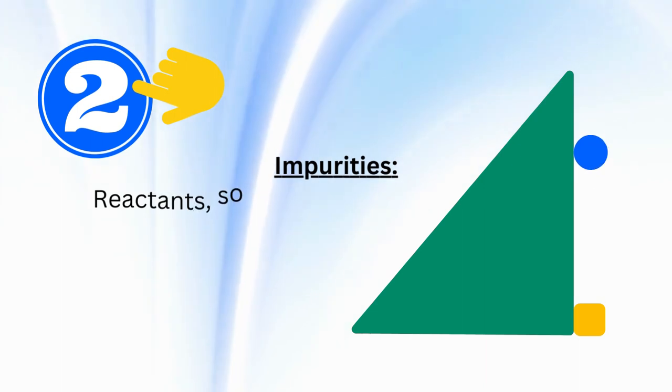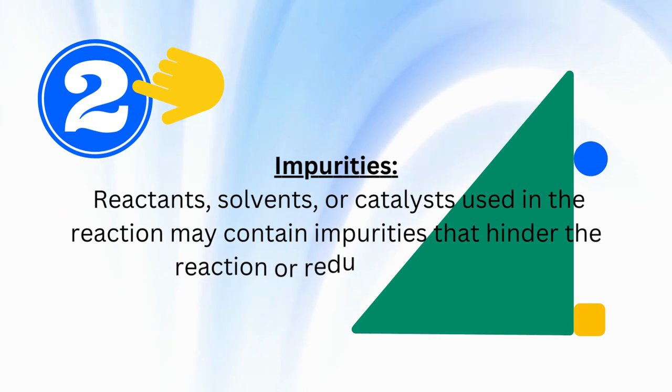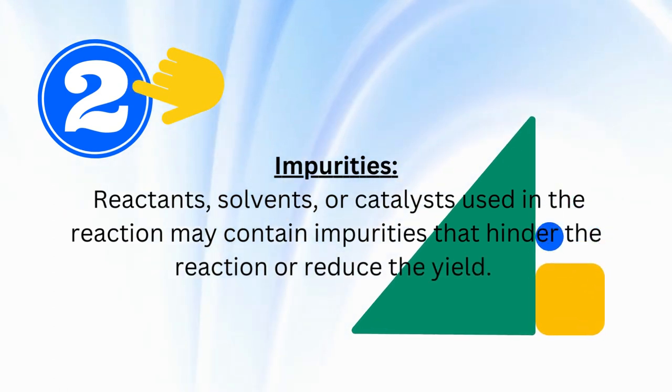Number 2. Impurities. Reactants, solvents, or catalysts used in the reaction may contain impurities that hinder the reaction or reduce the yield.